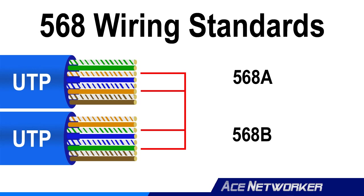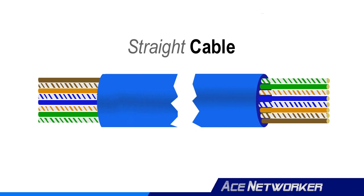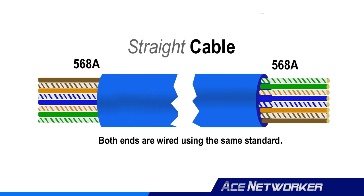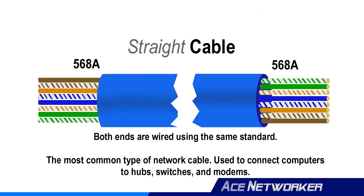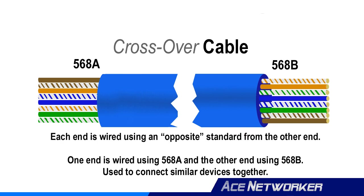Whether you choose 568A or 568B, if both ends of the same cable are wired using the same standard, you have what's known as a straight-through cable. The cable shown here is wired on both ends using the 568A standard. This allows data to pass through from end to end without moving any wires to different pins. A straight-through cable is the most common type of network cable, used to connect end devices directly to hubs, switches, and modems.